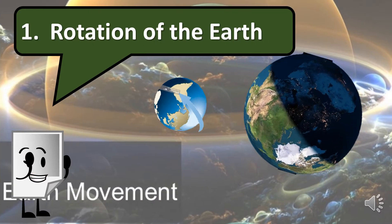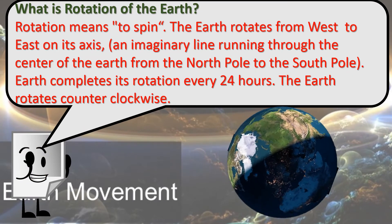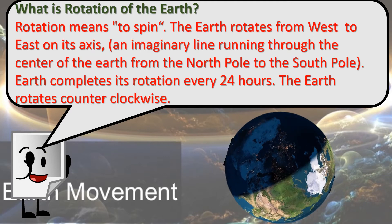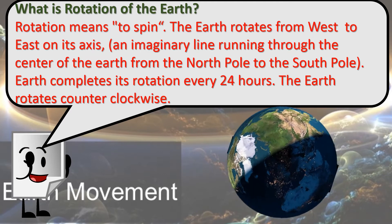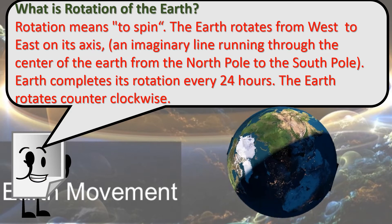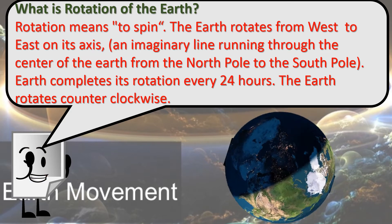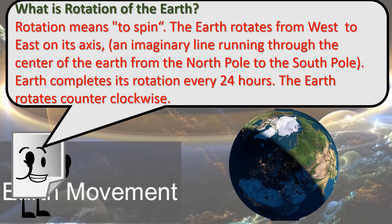Rotation of the Earth. What is rotation of the Earth? Rotation means to spin. The Earth rotates from west to east on its axis, an imaginary line running through the centre of the Earth from the North Pole to the South Pole. The Earth completes its rotation every 24 hours.